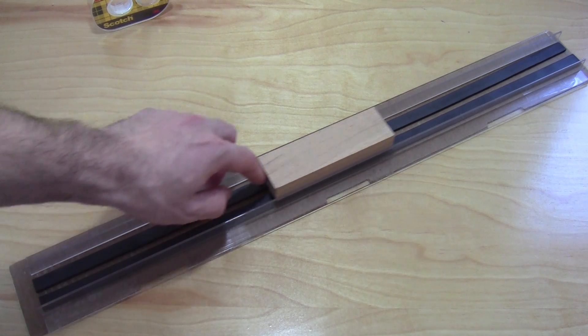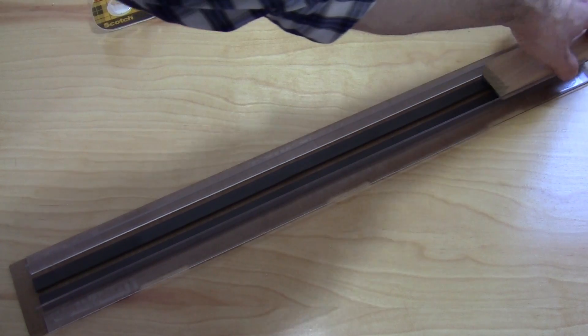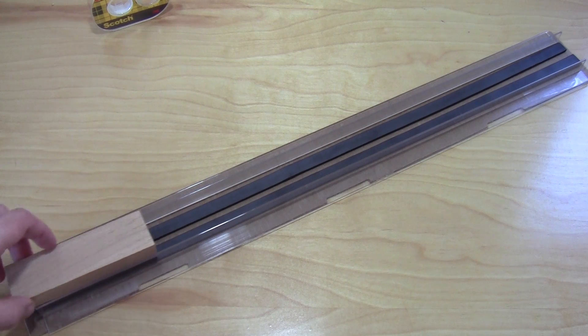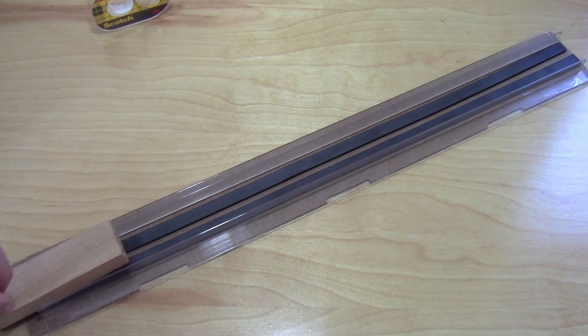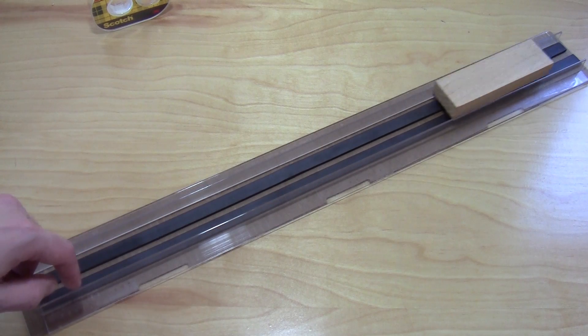Put the train in between the angles and it should be able to slide back and forth easily without getting stuck. A good way to test is just to give the train a flick with your finger and it should glide easily down the track before it comes to a stop.